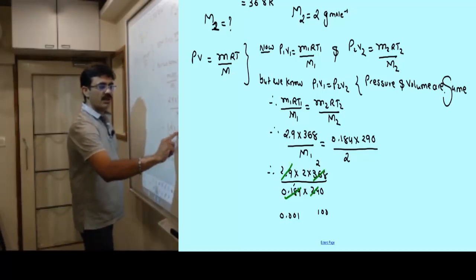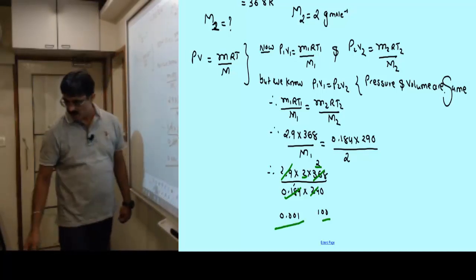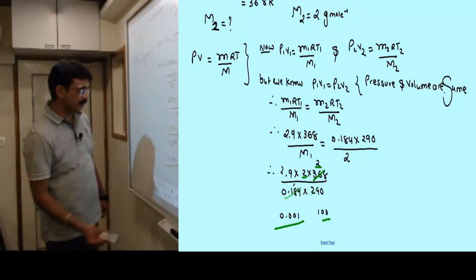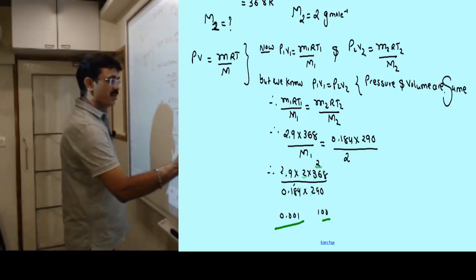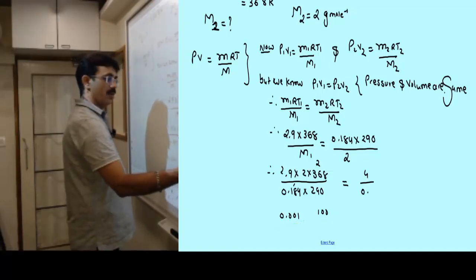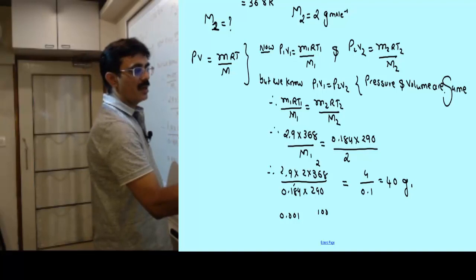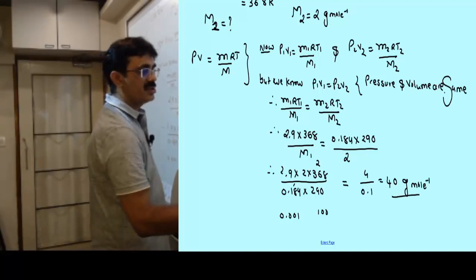After cancelling, we have 2 times 2 on top, which is 4, and 100 times 0.01 on bottom, which is 1. So we get 4 upon 0.01, equals 40 gram per mole. That is the answer.